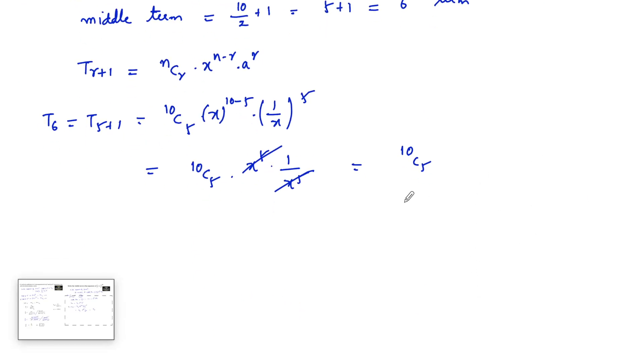Or on simplifying, using the formula n c r is equal to n factorial by r factorial into n minus r factorial, we can write 10 factorial upon 10 minus 5 factorial, that is 5 factorial, into 5 factorial.